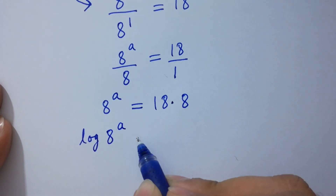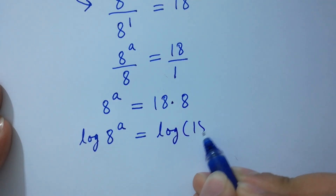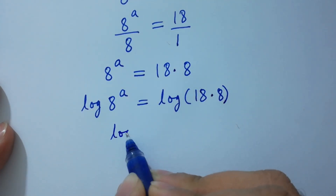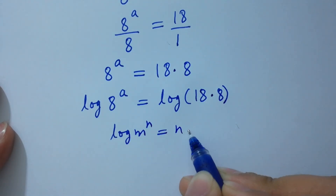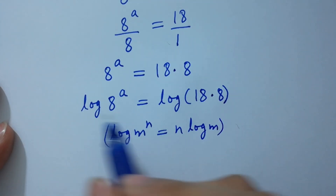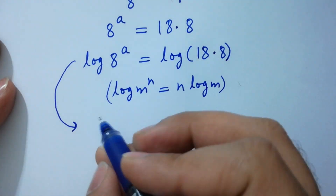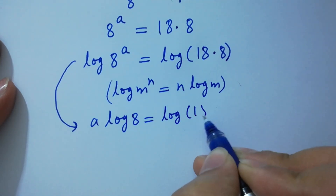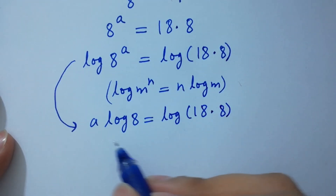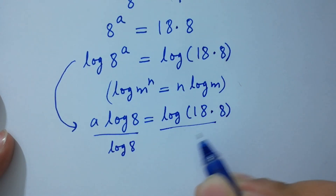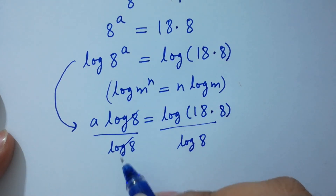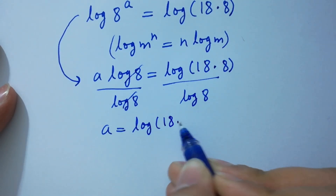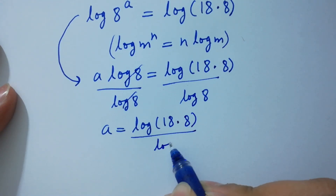Log 8 to the power a equals log of 18 times 8. As log m to the power n equals n log m, we have a log 8 equals log of 18 times 8. Dividing both sides by log 8, log 8 and log 8 cancel, so a equals log of 18 times 8 over log 8.